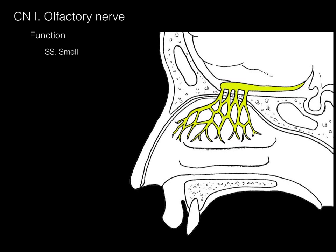The olfactory nerve is responsible for SS — special sensory smell. The only place you smell is the olfactory epithelium in your nasal cavity. If you knock out the olfactory nerve, the clinical finding is that you don't smell. This is called anosmia.